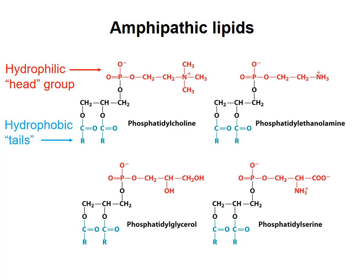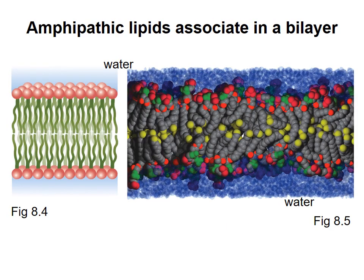In this video, I'll describe the structure and properties of lipid bilayers. Recall from the previous video that glycerophospholipids and sphingomyelins are amphipathic — they have a hydrophilic head group and hydrophobic tail groups. When placed in water, such molecules spontaneously assemble into bilayers to prevent the hydrophobic parts from coming into contact with the polar water molecules.